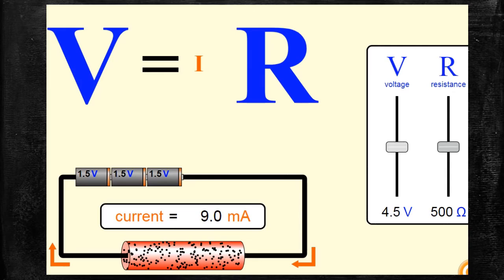Now I am going to raise up the potential difference from 4.5 volt to 6 volt. At present, when the potential difference is 4.5 volt, the current flowing through the conductor is 9 milliampere, and the resistance of the conductor is 500 Ohm. I am not going to alter the resistance — I am going to vary the potential difference, increasing it from 4.5 volt to 6 volt.